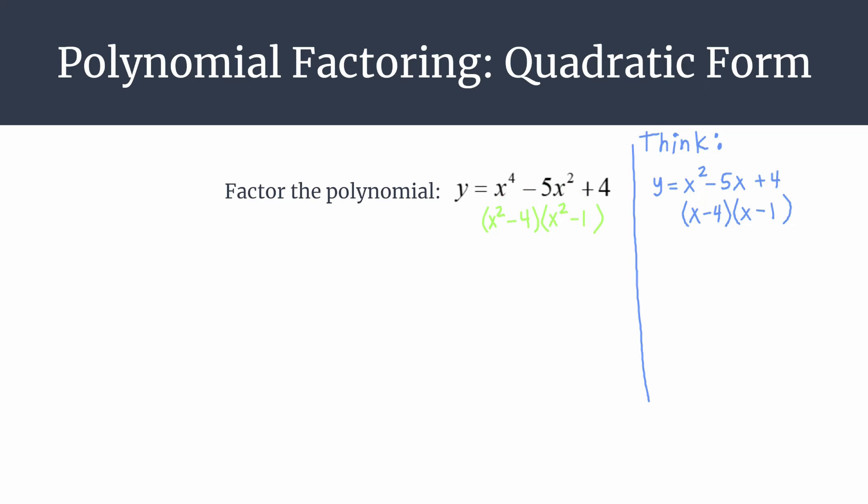We want to fully factor, so we recognize two binomials that are difference of squares. X squared minus 4 factors into x plus 2, x minus 2. X squared minus 1 factors into x plus 1, x minus 1.